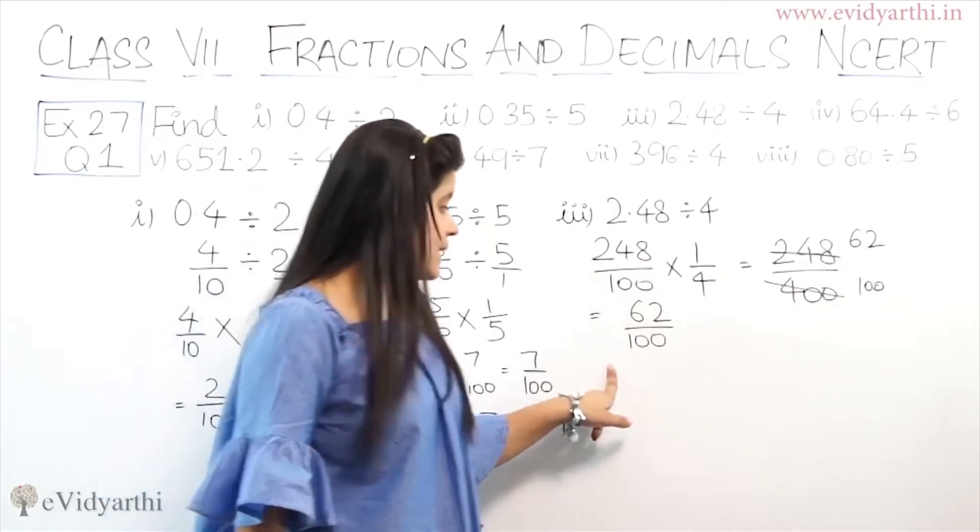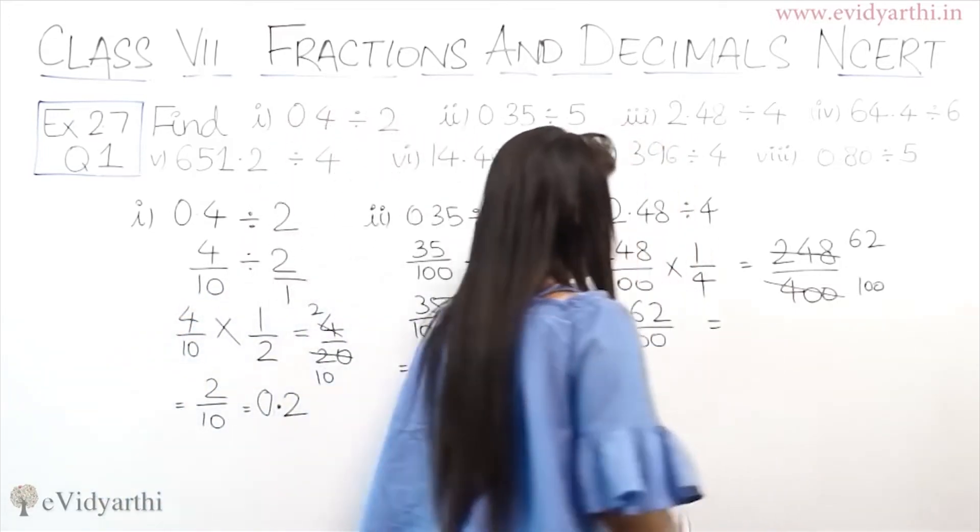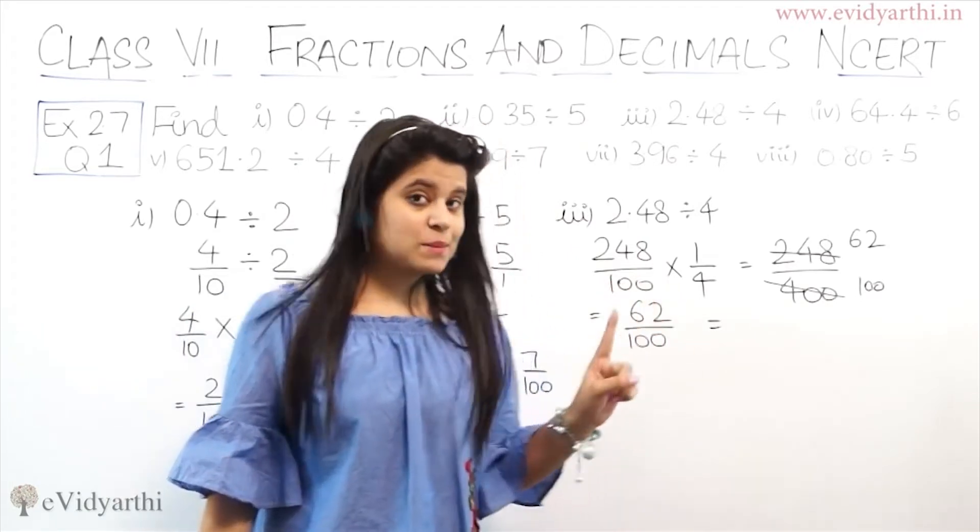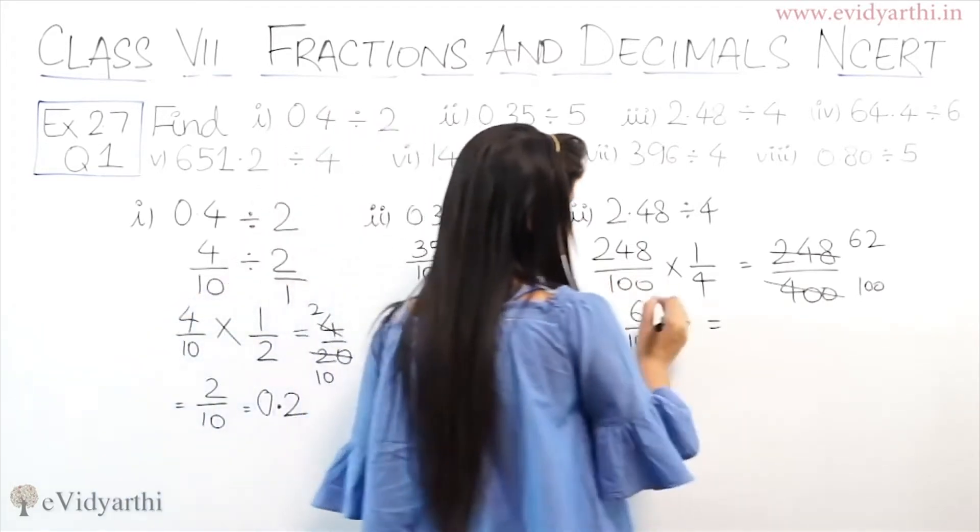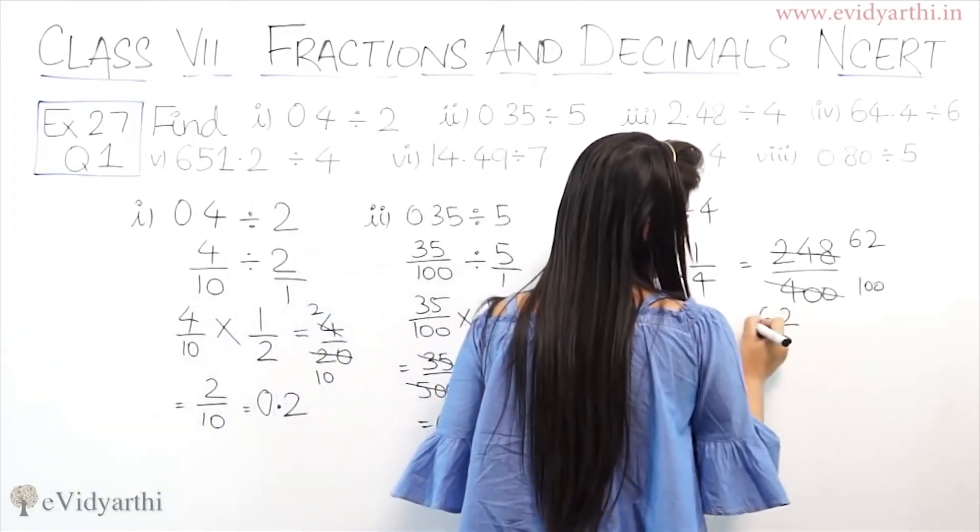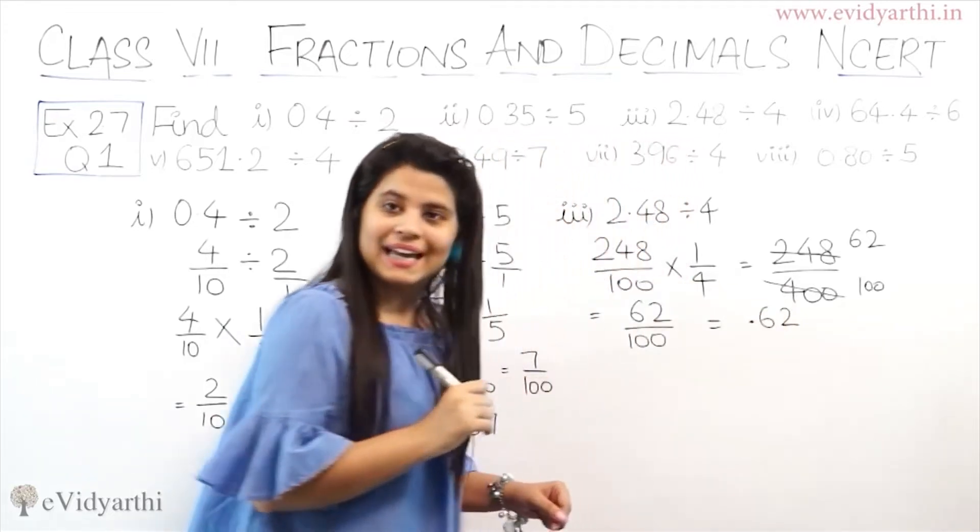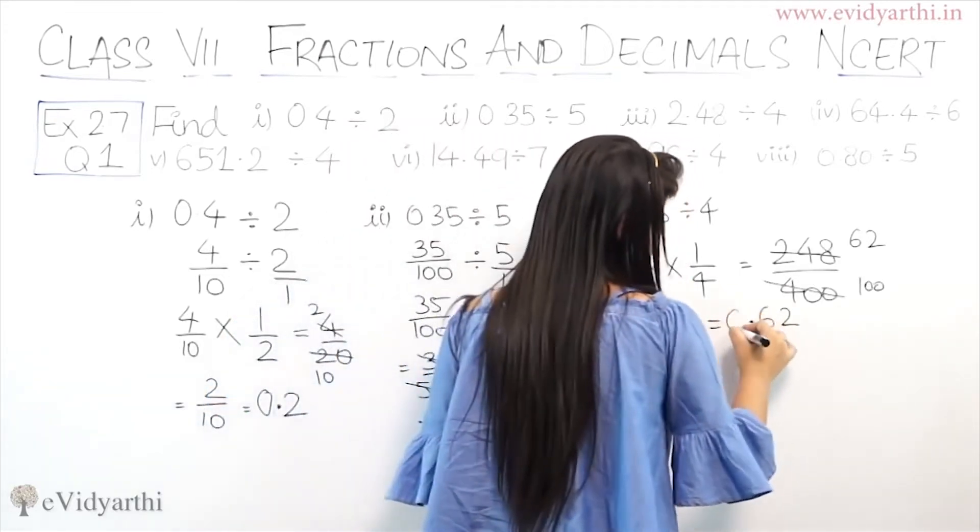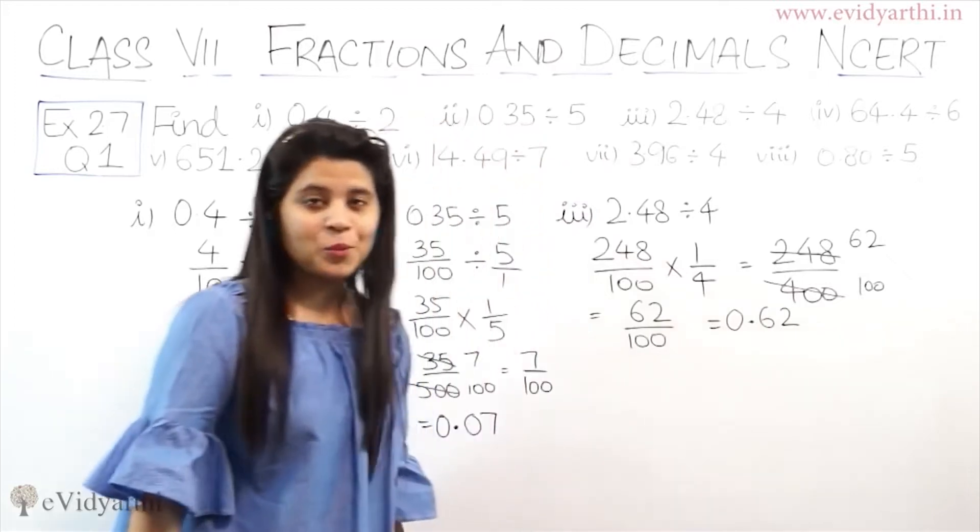So 4's table, 2 will not come. 24 comes. 4's table, 24 is 6. Then 8 comes, that is 2. So this will come as 62 upon 100. Now 62 upon 100, I can change in decimal. 2 zeros means that the decimal has 2 digits. So here is already 2 digits. So I will put decimal in these 2 digits. So this will be 0.62.